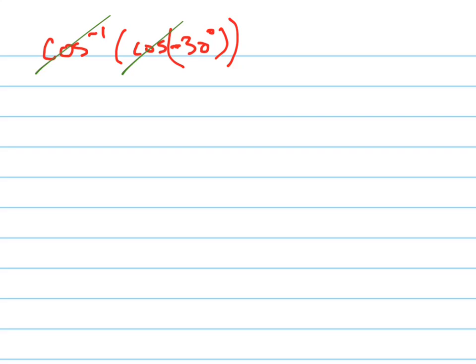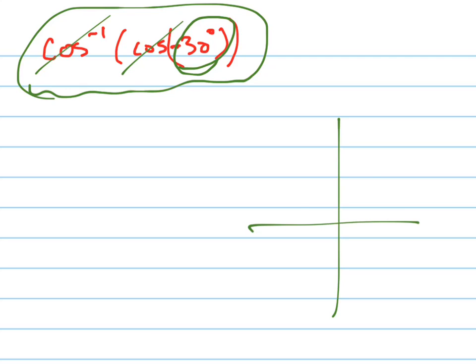And my answer is negative 30. And that would be right, except negative 30 is not part of the range of the cosine inverse function. Remember, the cosine inverse function is only defined in the first and second quadrant.